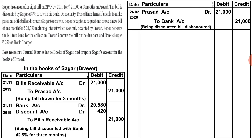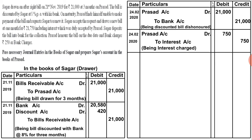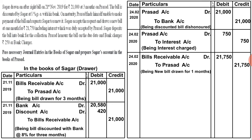Prasad also agreed to this condition. In this problem, there is no part payment — directly a new bill is drawn with interest added. First, we pass the interest entry: Prasad Account debit to Interest Account ₹750 — being interest charged. Then the new bill draw entry on 24th February: Bills Receivable Account debit to Prasad Account ₹21,750 — being new bill drawn for one month.